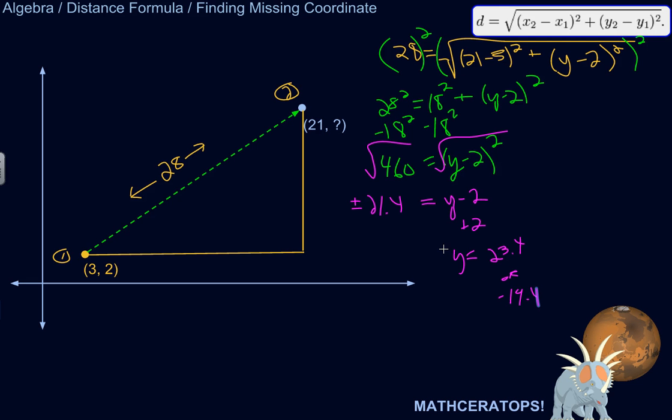Okay, so do we have to choose between the two or can we accept both? Okay, so what is this saying? So this could be actually (21, 23.4).